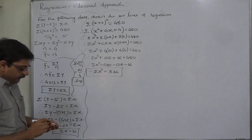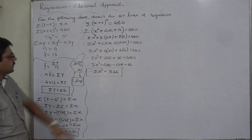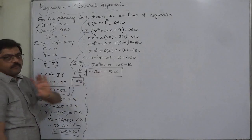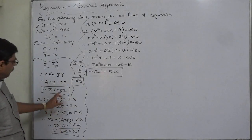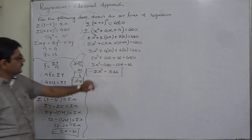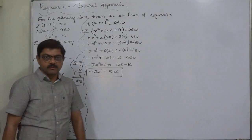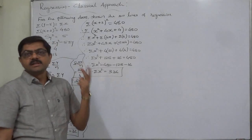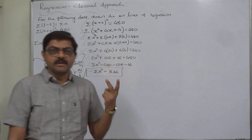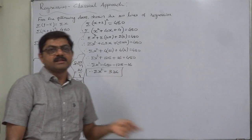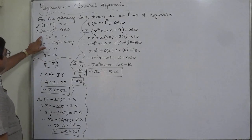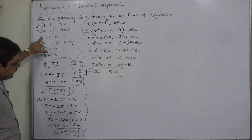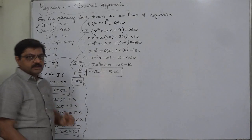So we found the third summation. Out of the five summations needed — σx, σy, σx², σy², σxy — we now have three: σx, σy, and σx². We still need σy² and σxy.